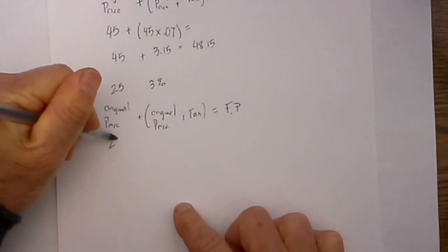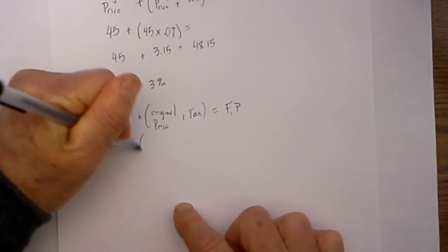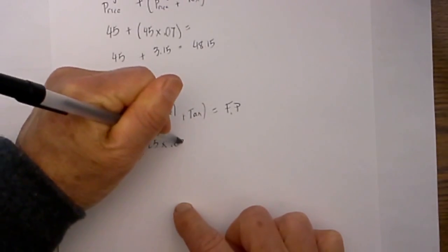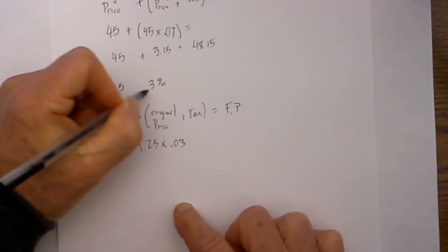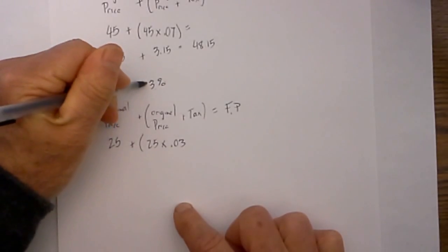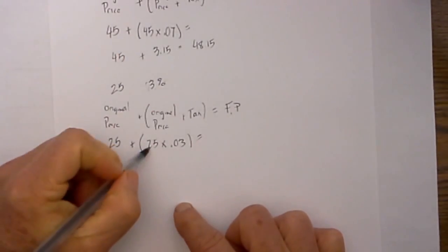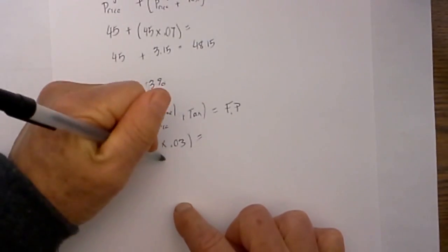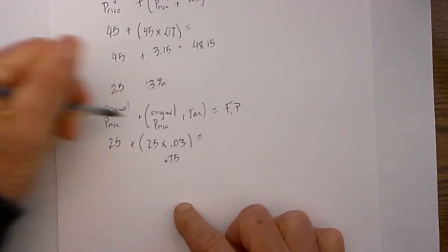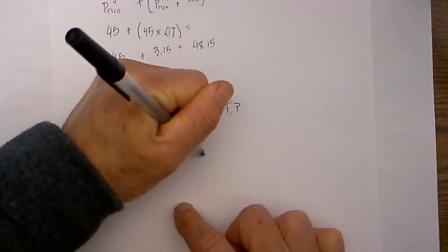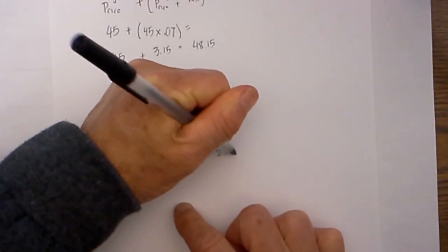Let's plug in what we know. We have 25 plus 25 times 0.03, again move the decimal places 2 to the left which equals 0.03. When I multiply, 25 times 0.03 equals 75 cents. Bring the 25 down. So that will equal $25.75.